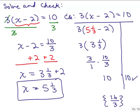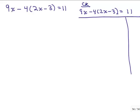Let's solve and check this next problem. Why don't you try it first? Put the video on pause and see how you do. On the left-hand side it's not simplified because I have a parenthesis, so I'm going to distribute the negative 4 — be very careful with that minus sign. You can think of it as plus a negative 4. So I still have 9x, and then negative 4 times 2x is minus 8x, and negative 4 times negative 3 is plus 12.